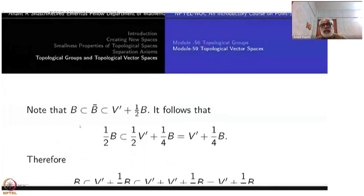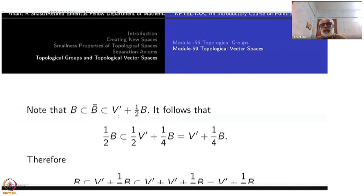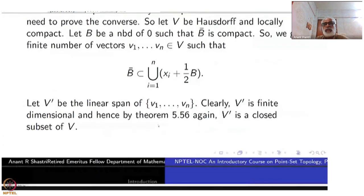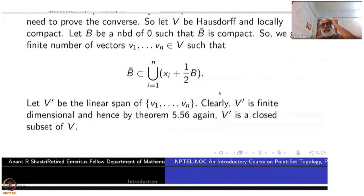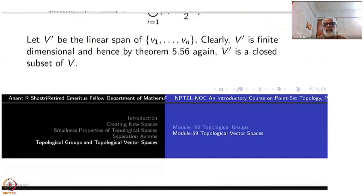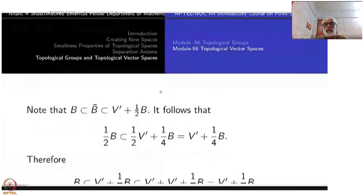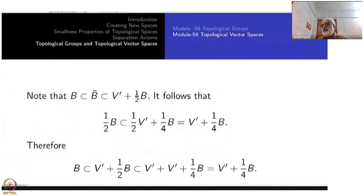Now B is contained in B̄, and B̄ is contained in V' + (1/2)B, since each V_i + (1/2)B is contained in V'. Taking half of B: (1/2)B ⊆ V' + (1/4)B, because (1/2)V' = V' as V' is a vector space. Therefore B ⊆ V' + V' + (1/4)B = V' + (1/4)B.